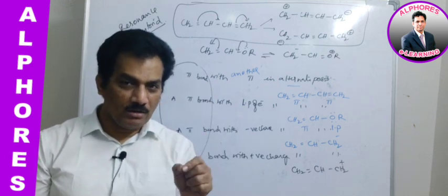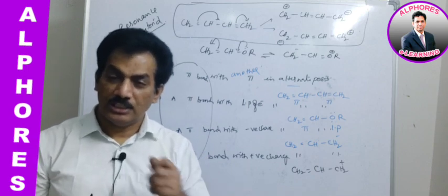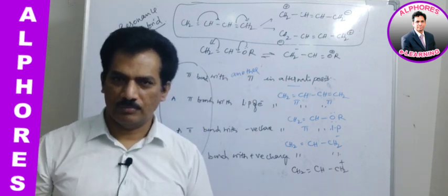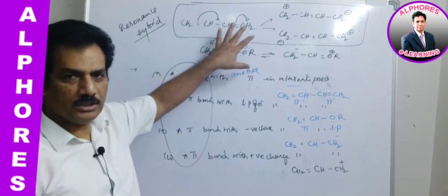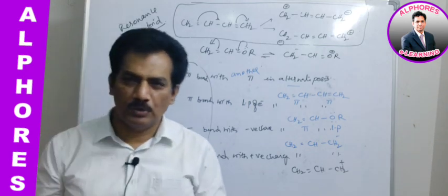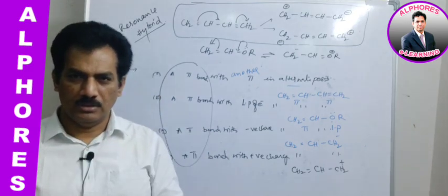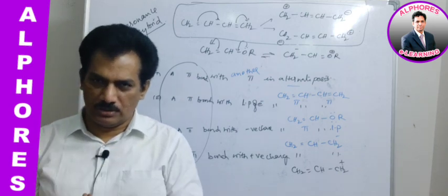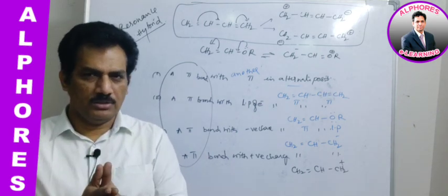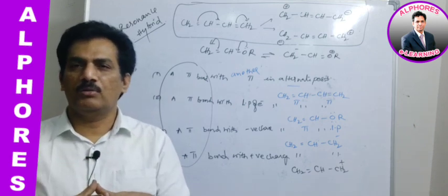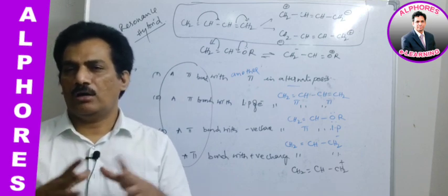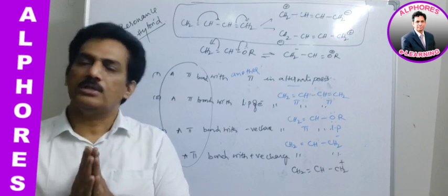One key factor in deciding the contribution percentage is the stability of the contributing structure — more the stability of a contributing structure, more its contribution to the resonance hybrid. These are key points you may not have observed deeply in 11th class, which is why this GOC class is introduced as the foundation for second year organic chemistry. We will continue the next topic in the next session.